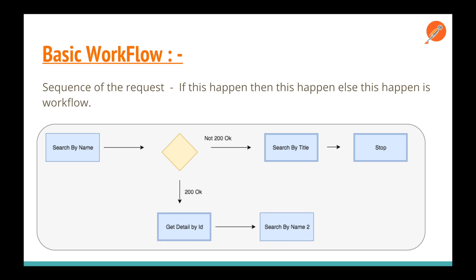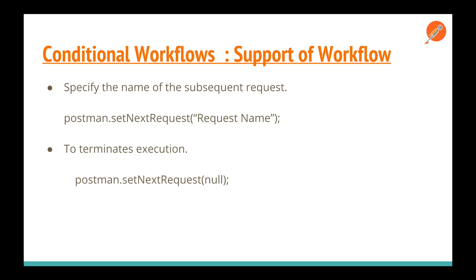So let's see how we can automate conditional workflows in Postman. There is a built-in function in Postman which is `postman.setNextRequest`, where you specify the name of the request. As shown, you pass the request name, and if you want to terminate the execution, you just pass a null value. One important point: this code needs to be added in the Tests tab.